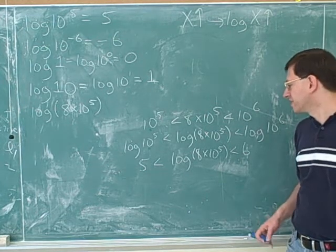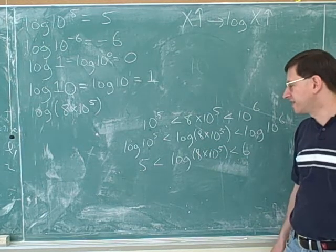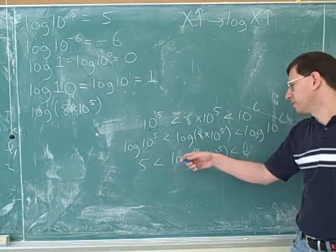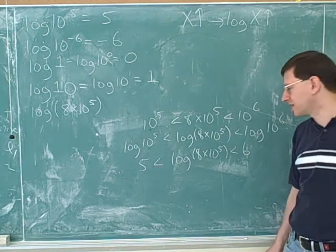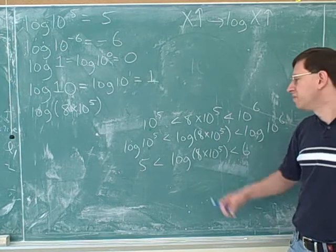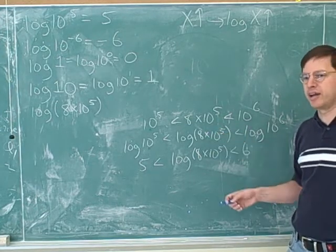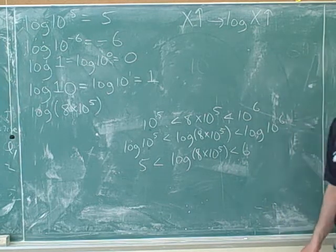And the log of 10 to the sixth is 6. And now we have our approximation. Without a calculator, we can't say exactly how big this logarithm is, but we can say it's between 5 and 6. And as we've talked about on your test, it's good enough to just approximate like this. Since you're not allowed to use a calculator on your test, it's good enough to just approximate the log to within the one integer range. So this would be good enough to find the answer here for your test.